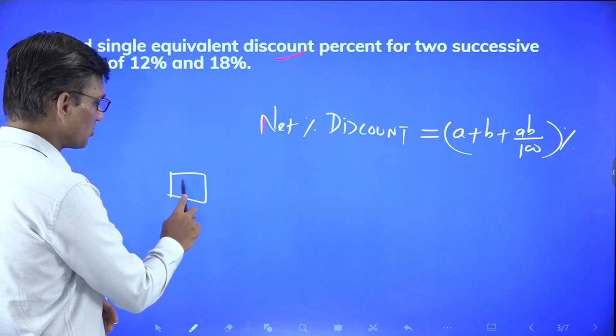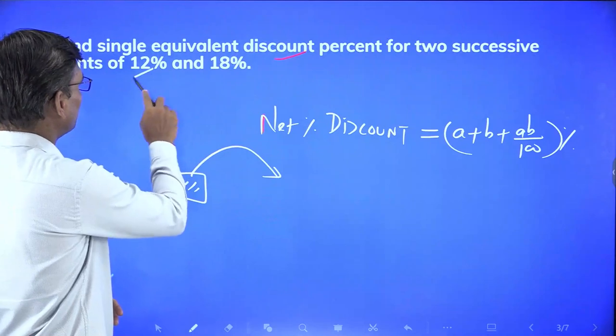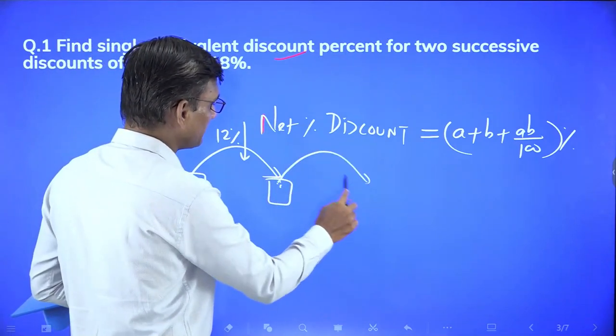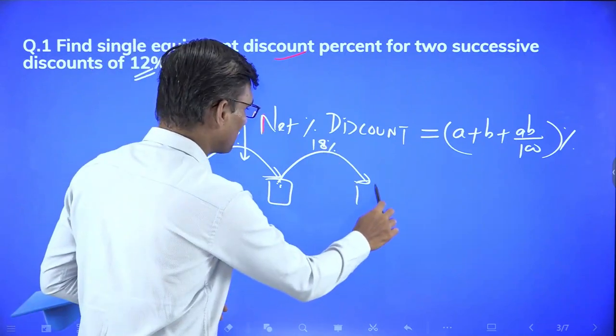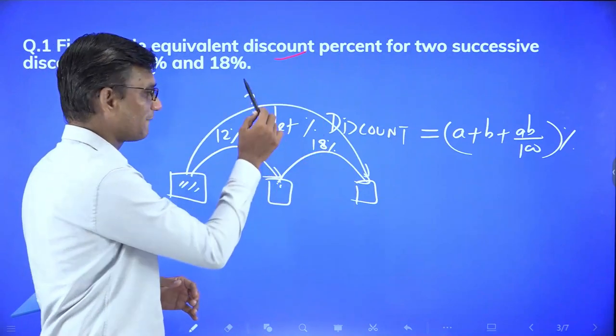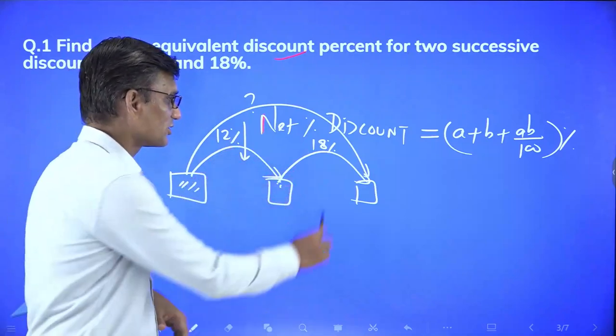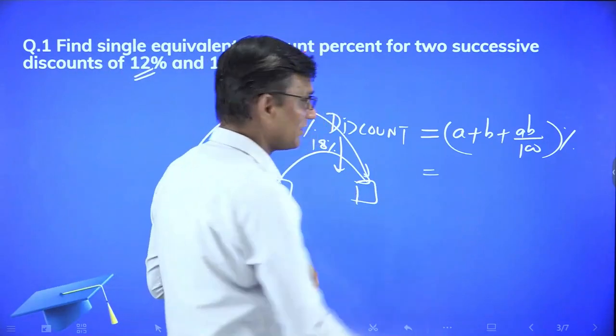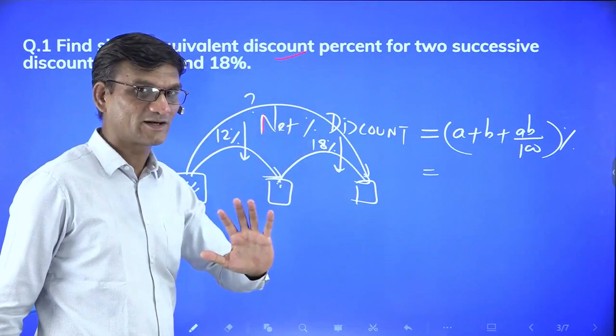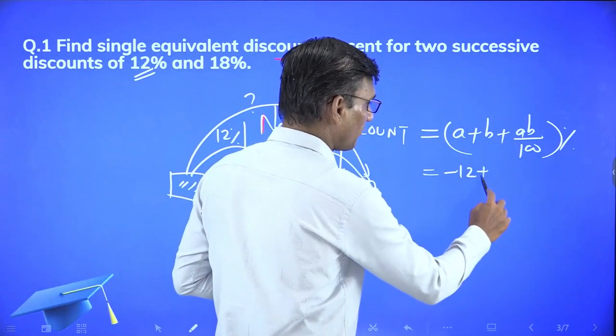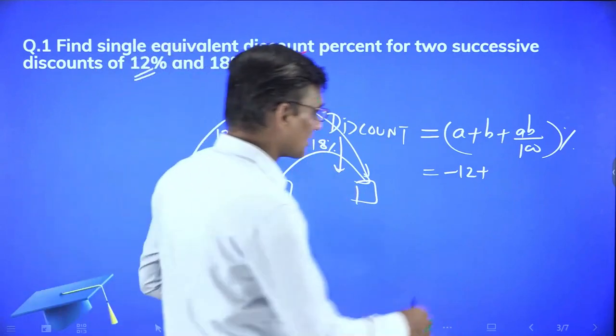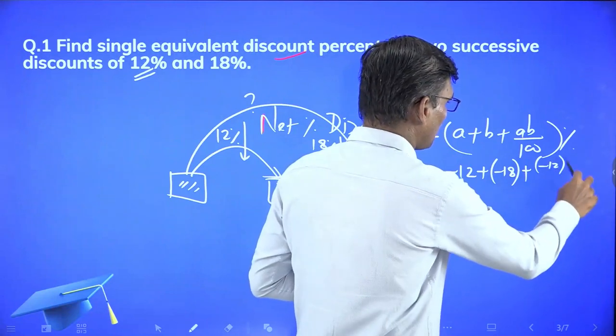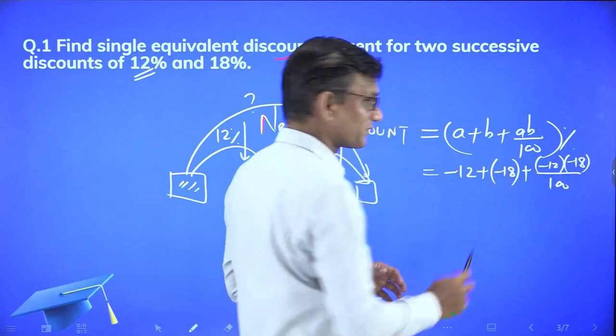If a shopkeeper is giving successive discounts - first discount of 12%, then another successive discount of 18%, and you want to know effectively what net discount you got, the A-B formula helps you there. Discount is a kind of reduction in price. So the percentage is decreasing, so when things increase we use plus, when they decrease we use minus.